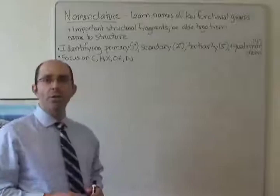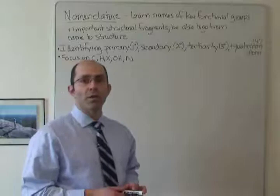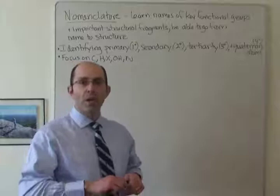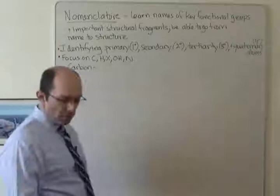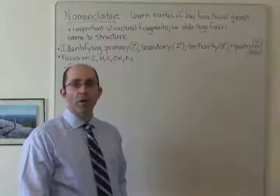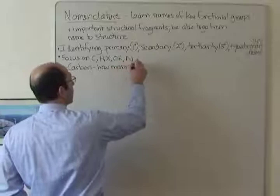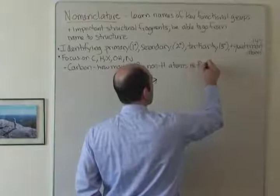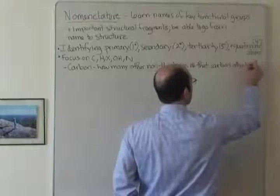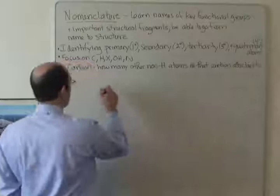The atoms we care about for primary, secondary, and so on are carbon, hydrogen, halogens, oxygen in terms of alcohol functional groups, and nitrogen in terms of amine functional groups. For carbon, the definition is: how many other non-hydrogen atoms is that carbon attached to? So how many other non-H atoms is that carbon attached to?